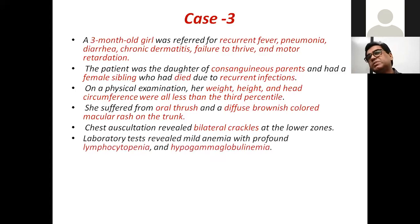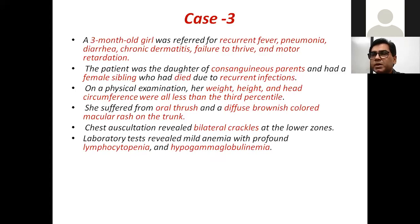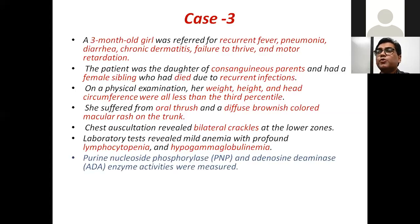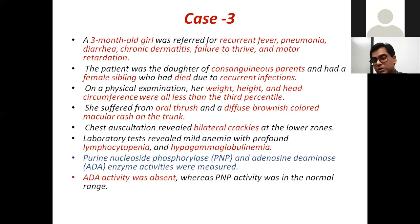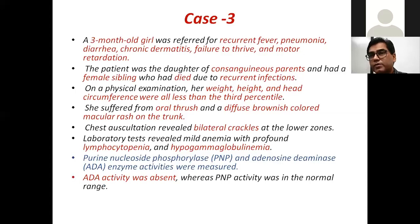Laboratory findings revealed mild anemia with profound lymphocytopenia — reduced lymphocyte white cell lineages — and hypogammaglobulinemia with reduced immunoglobulins. Enzyme activities were measured: purine nucleoside phosphorylase and adenosine deaminase (ADA). The ADA activity was deficient, whereas purine nucleoside phosphorylase activity was normal.